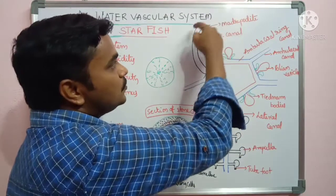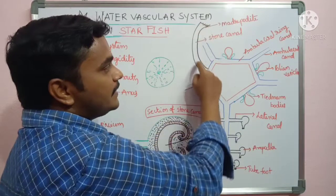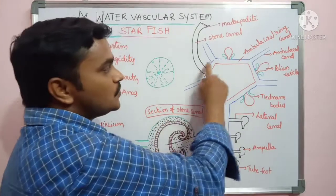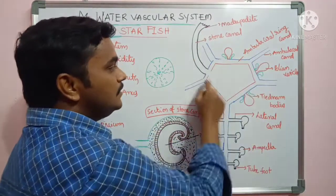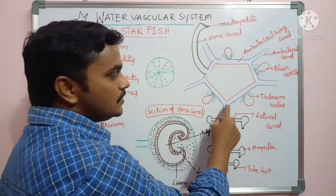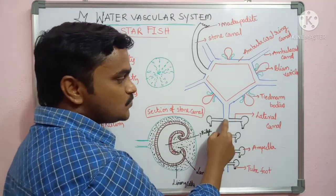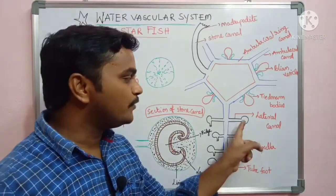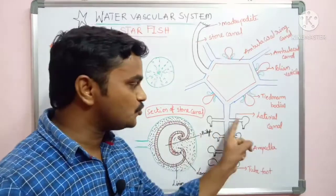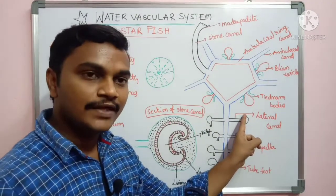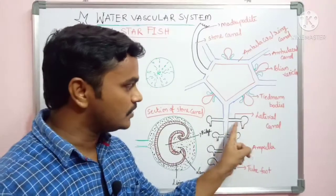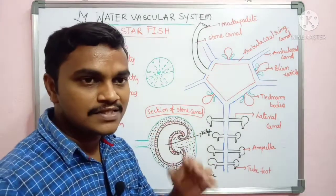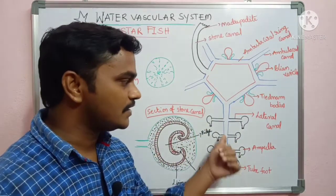Water enters from seawater to the madriporite. From there it enters into the stone canal. From there it enters into the ambulacral ring. From the ambulacral ring, the five radial canals receive the water. Those radial canals transmit the water to the lateral canals. Every lateral canal contains two branches, and these two branches transport water to the ampulla and sucker — the tube feet.